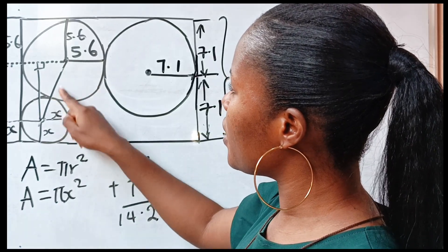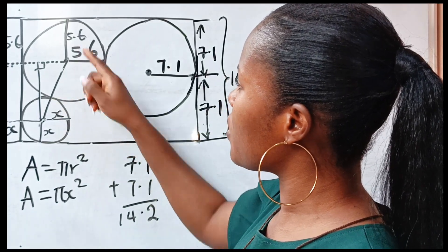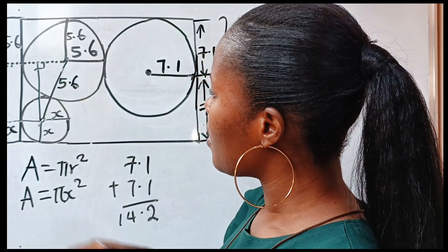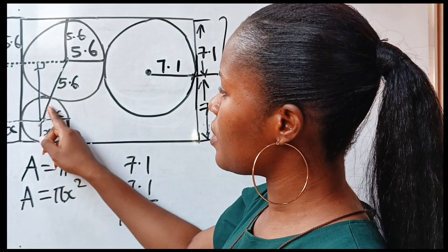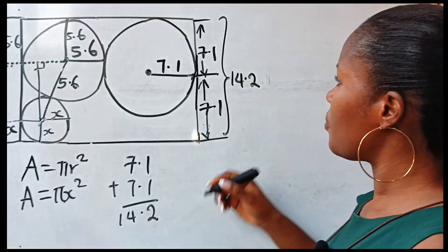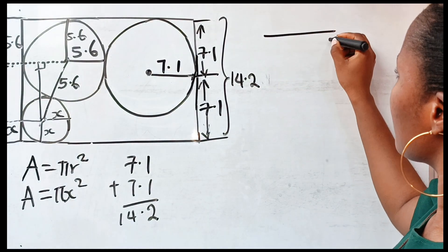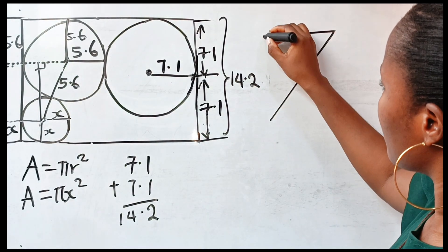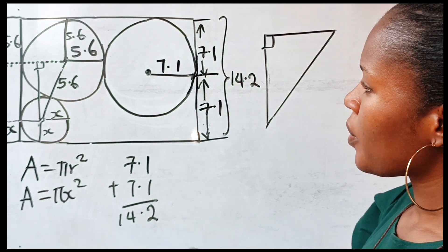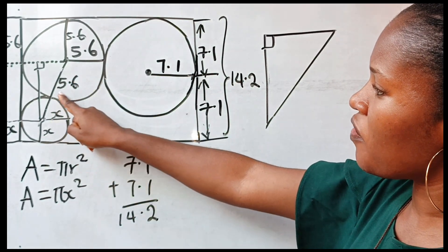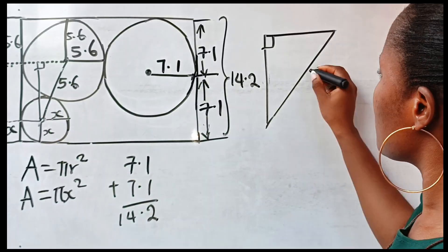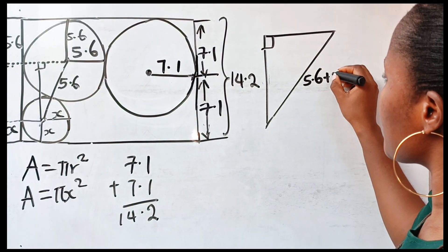From here to here is the radius of this circle, which is 5.6. From here to here is x already. From here to here is x. So this is a right angle, meaning that from here to here will be 5.6 plus x.